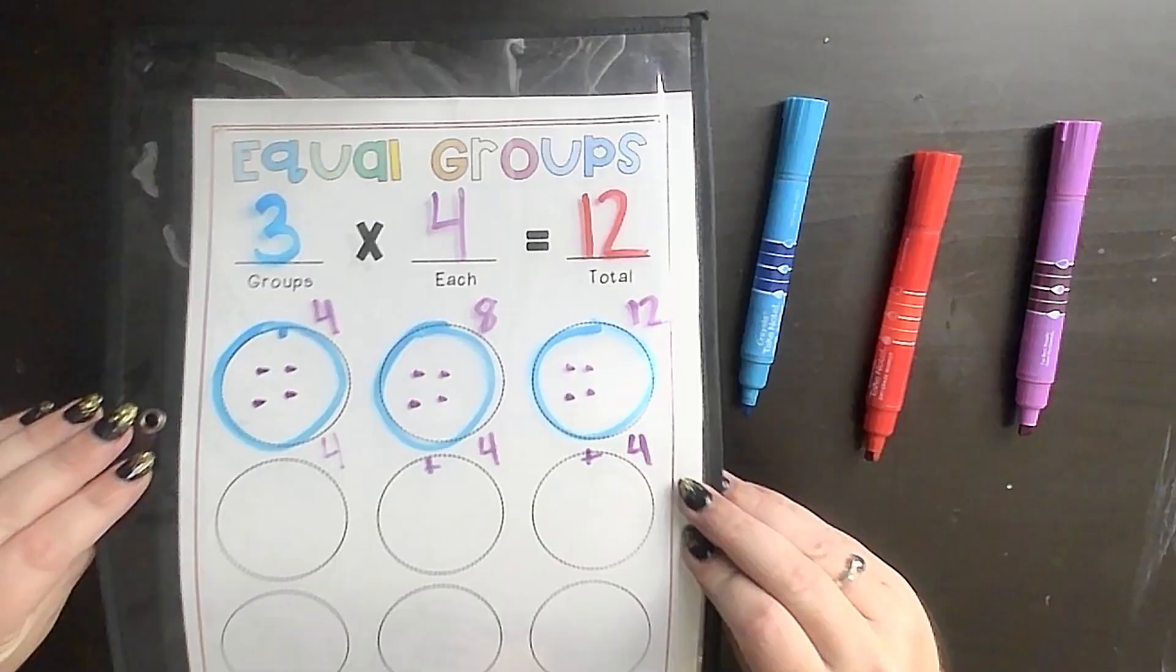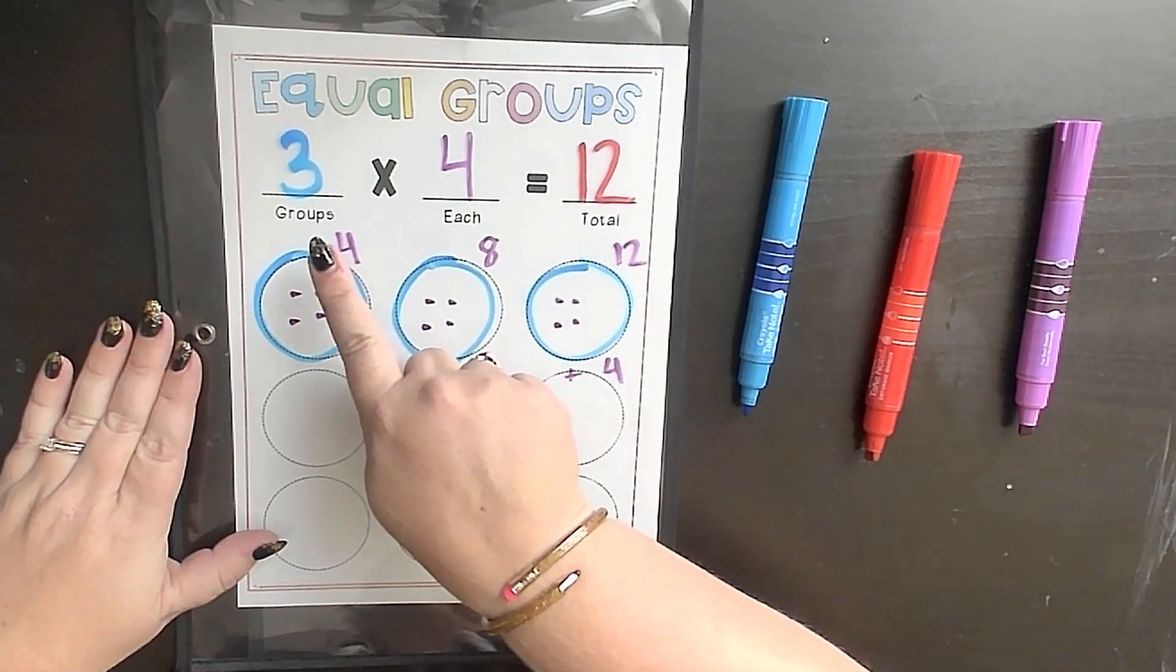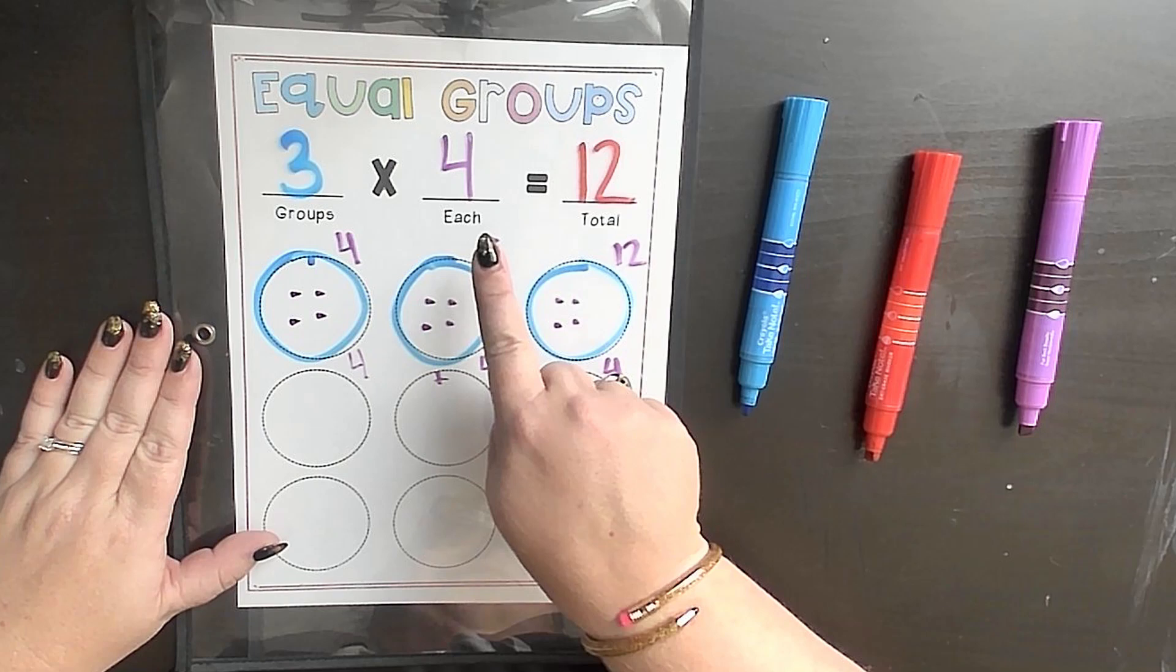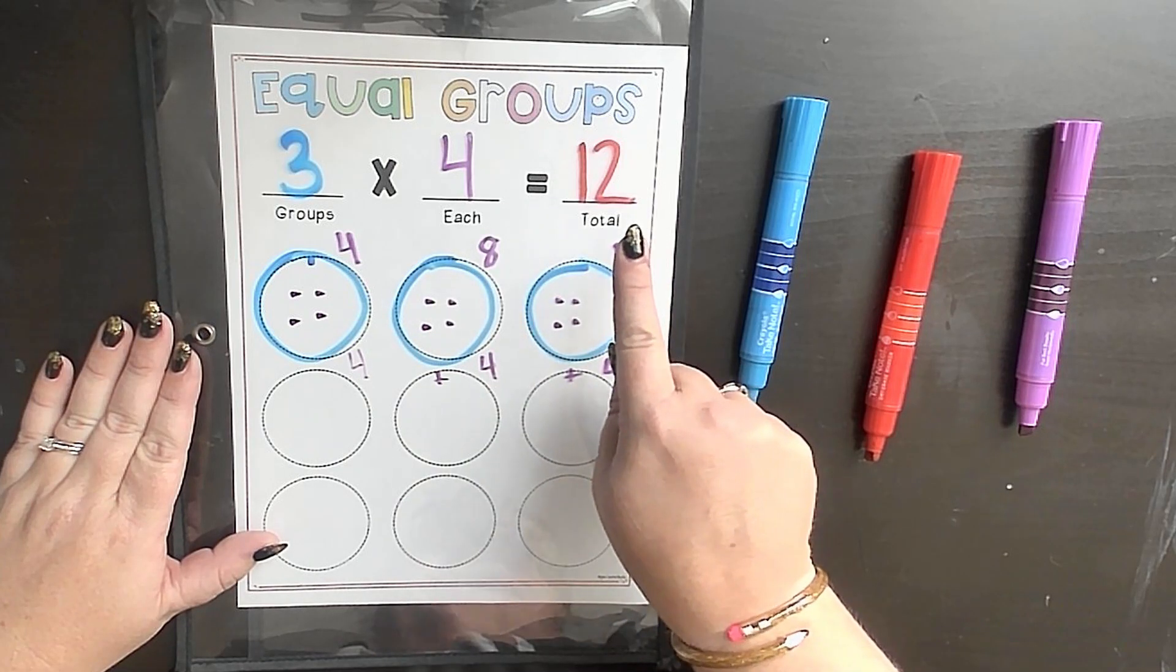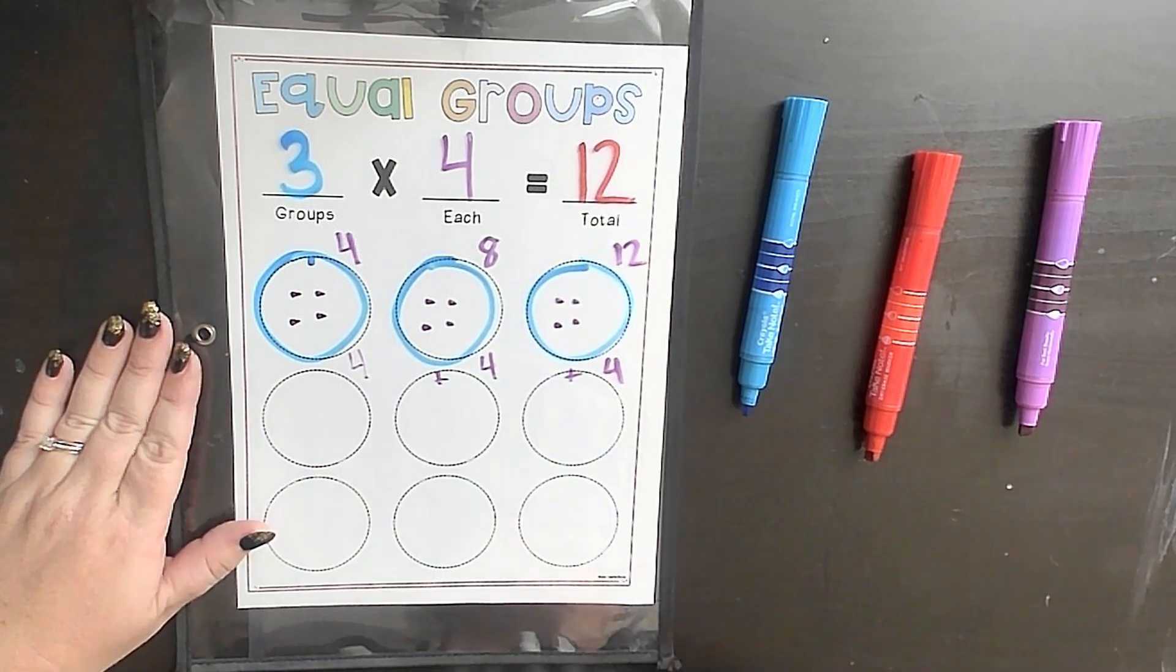However, make sure when we're visually modeling them, we're making sure that first number is our groups, that second number is how many in each, and of course, we'll have our final product or our total. So good luck with math. Have a wonderful day.